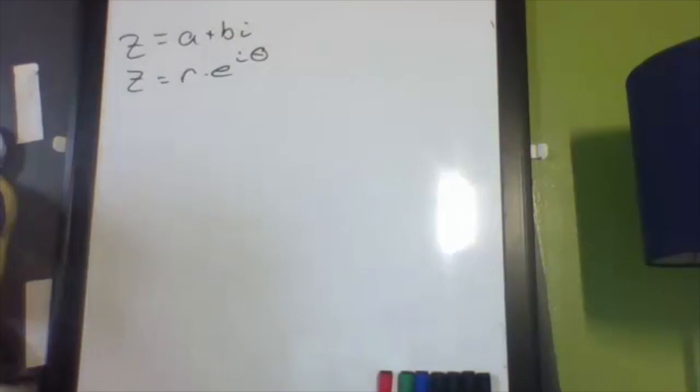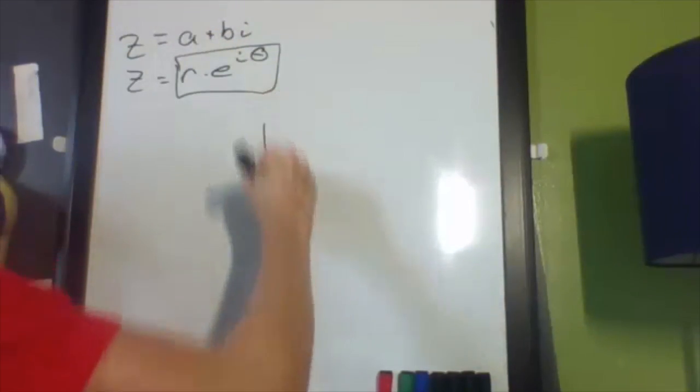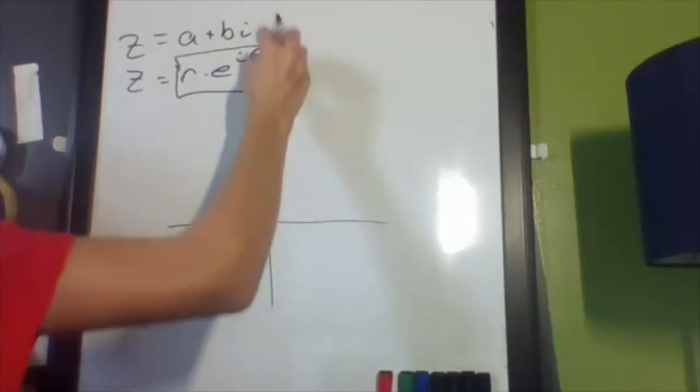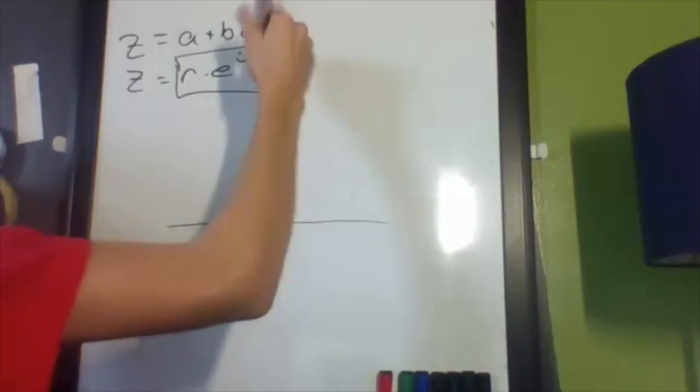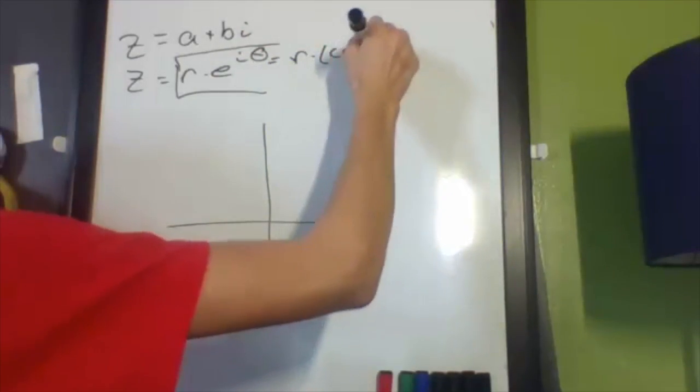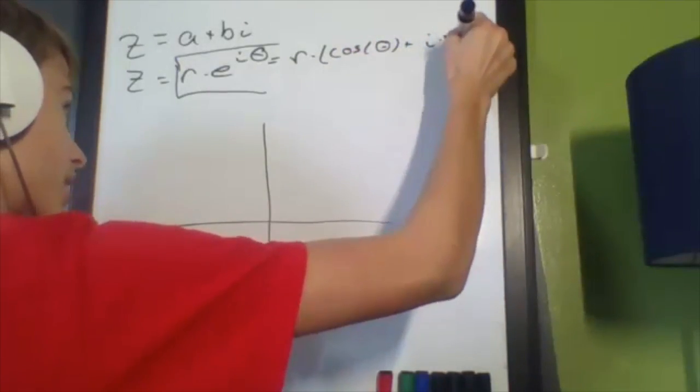So first, we need to discuss what this even means. Now, if you remember, e to the i theta is just cosine theta plus i sine theta.